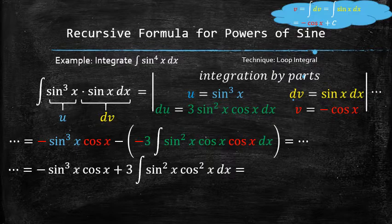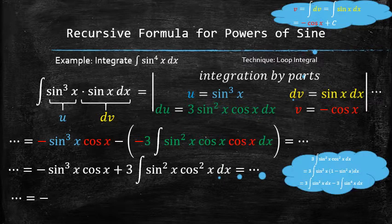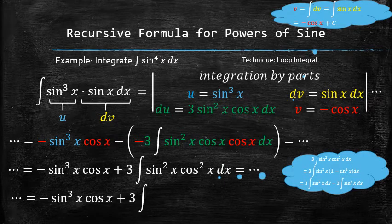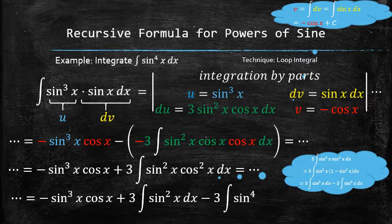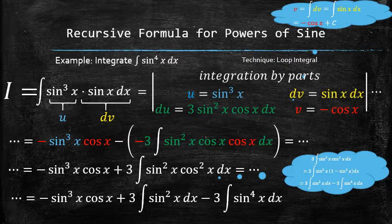To find the new integral, we use the Pythagorean identity to rewrite the square of cosine, then use the linearity of the integrals to split the integral into one simple one and one that is the original integral, which creates a loop. We introduce i to replace the original integral everywhere it appears.